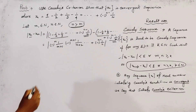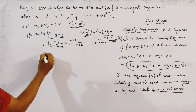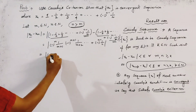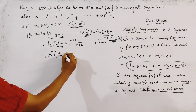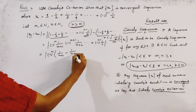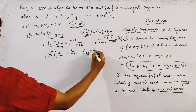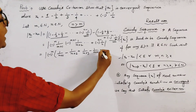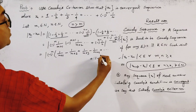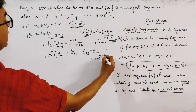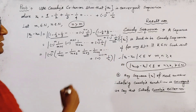So we have xn - xm equal to (-1)^m * [1/(m+1) - 1/(m+2) + 1/(m+3) - 1/(m+4) + ... ], and the last term is (-1)^(n-1) * (1/n).